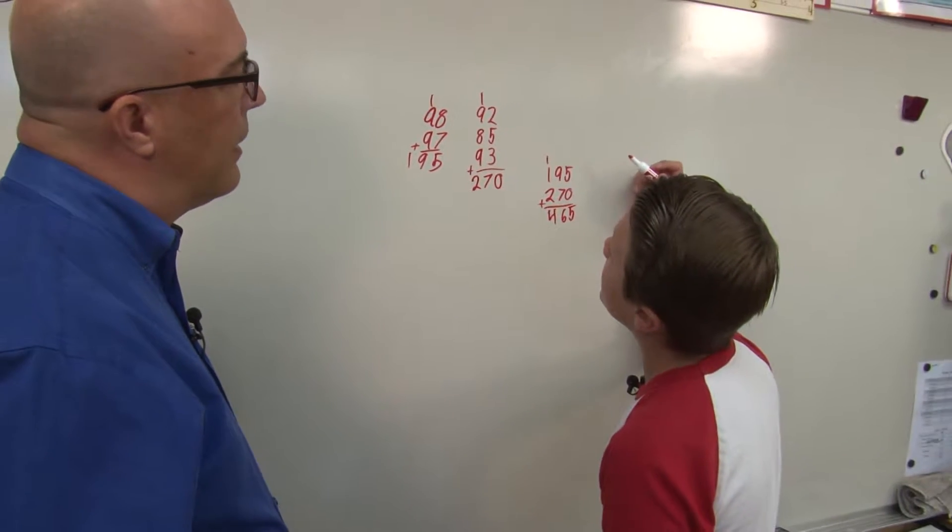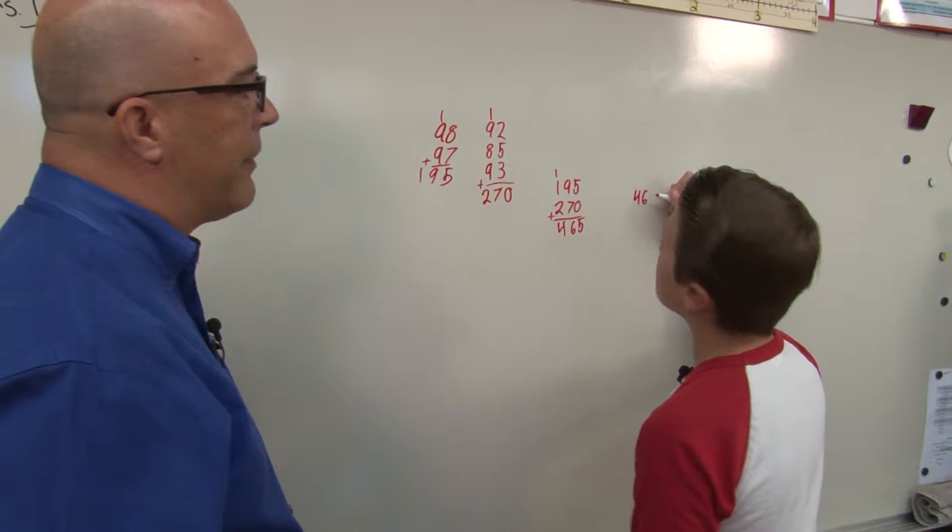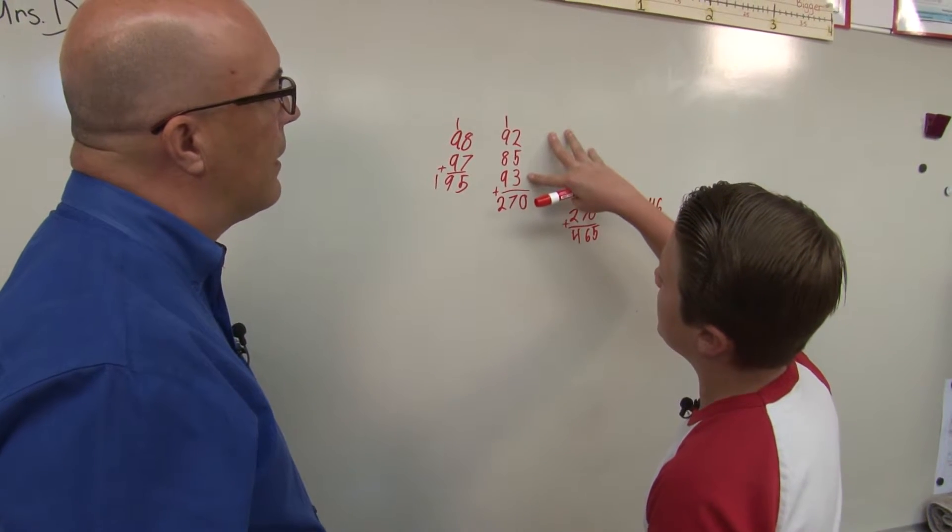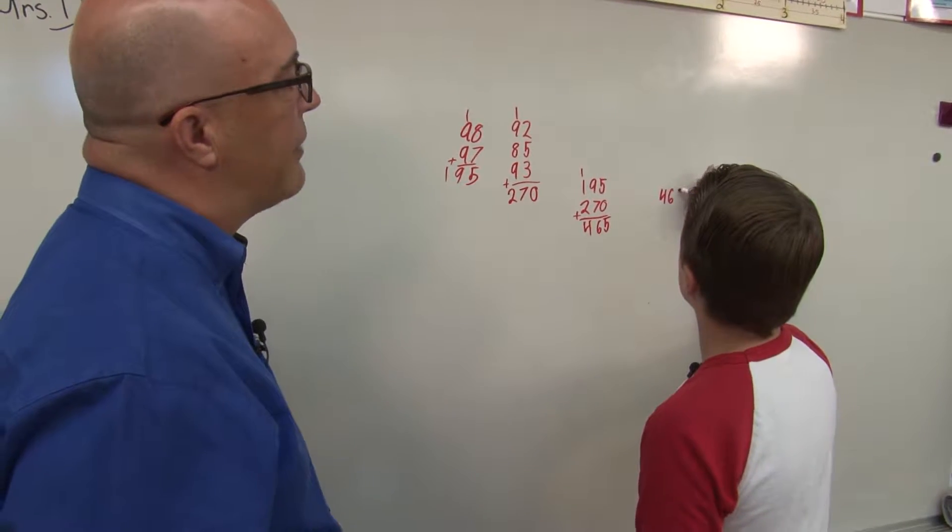465 divided by 5. Right. And how do you know that you divide it by 5? By how many numbers there were to add. Right. So 465 divided by 5.